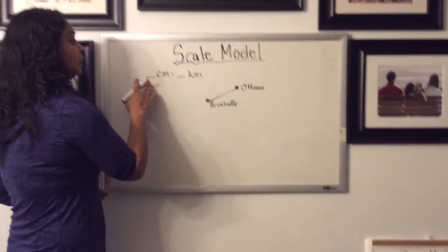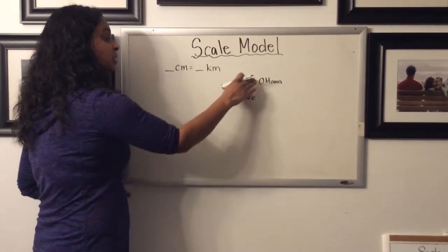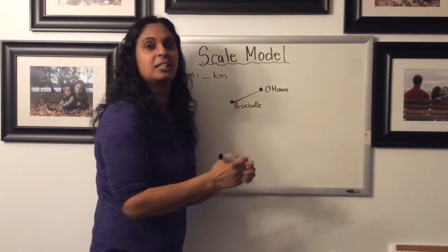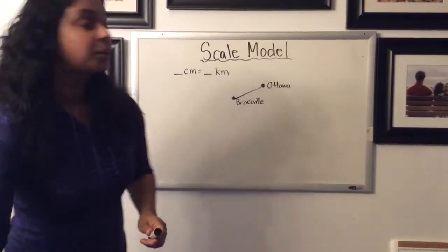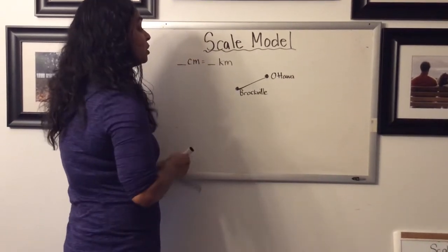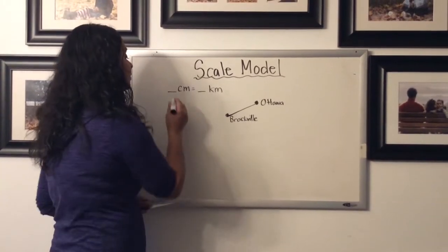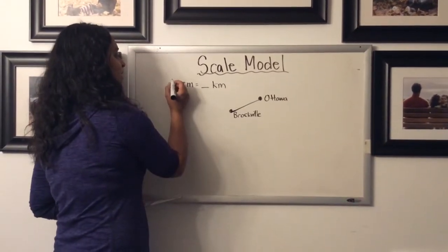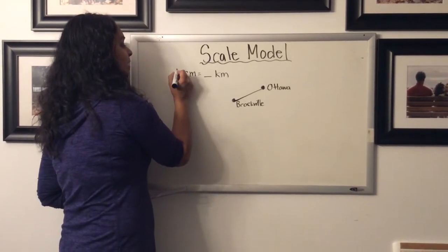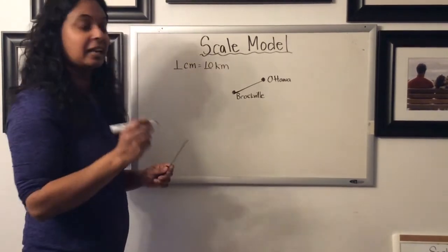For example, you're going to measure distances between two dots, which can represent two cities, using your ruler. Then you'll use the key to solve how much that would be approximately in real life. In my case, every one centimeter is equal to 10 kilometers in real life.